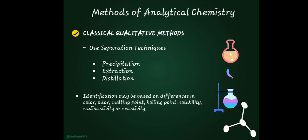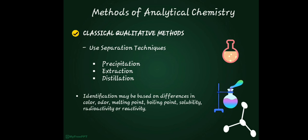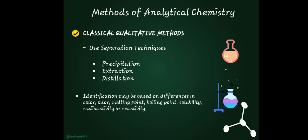The next process is extraction. In analytical chemistry, extraction pertains to the transfer of the target analyte from one phase to a different phase where further processing and analysis occurs. An analyte is a substance whose chemical constituents are being identified and measured. The target in extraction is to transfer that substance from one phase to another where further analysis takes place.